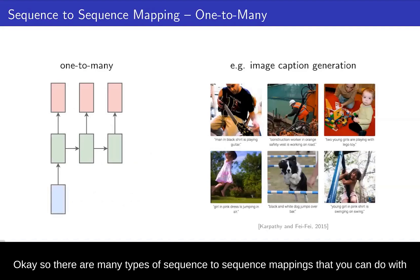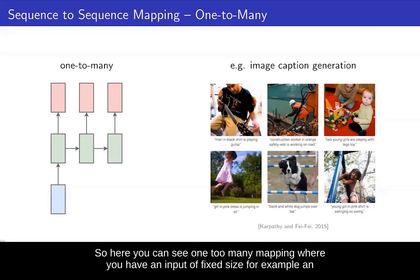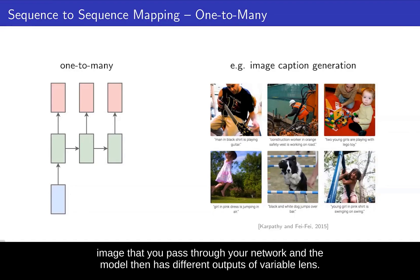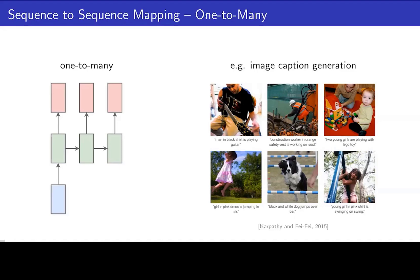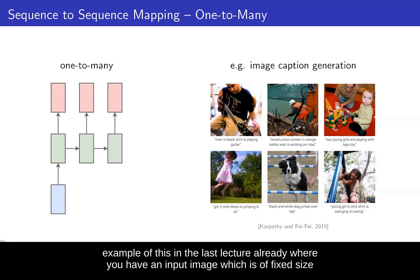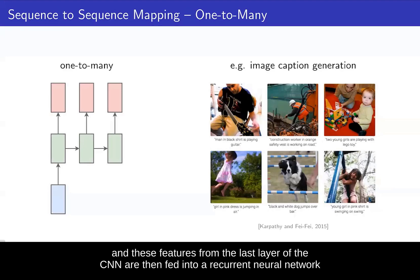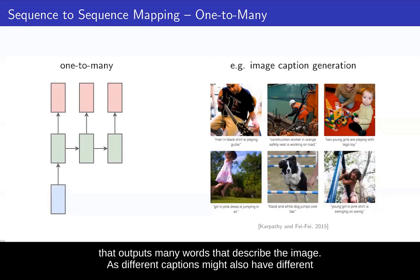There are many types of sequence-to-sequence mappings that you can do with recurrent neural networks. Here you can see a one-to-many mapping, where you have an input of fixed size — for example, an image — and the model then has different outputs of variable lengths. An example of this is image captioning, where you have an input image fed into a convolutional neural network. The CNN learns spatial features, and these features from the last layer are then fed into a recurrent neural network that outputs many words describing the image.